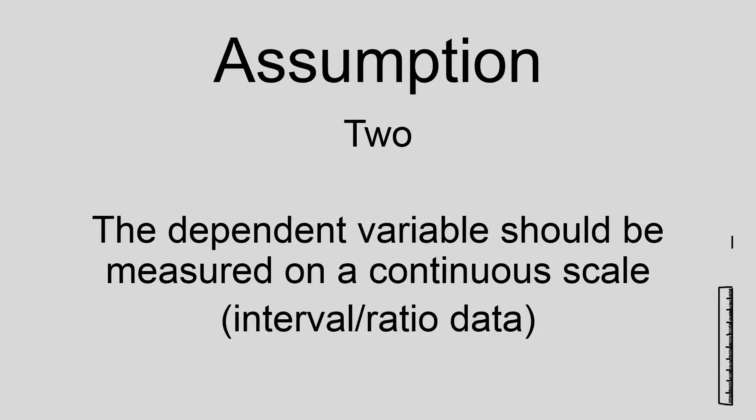The second assumption is that the dependent variable is measured on a continuous scale. This means that the level of data should be interval or ratio. Examples of interval and ratio data include time, weight, scores on an intelligence test or scores on an exam. The first thing you must do is look at the data you've gathered and be sure that it's measured on a continuous scale.